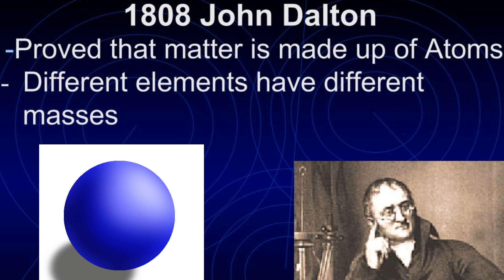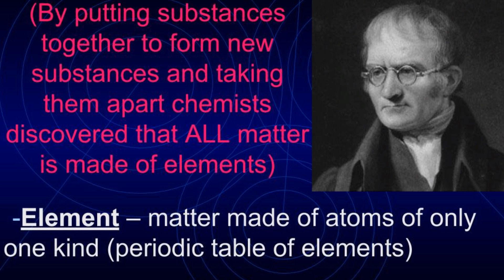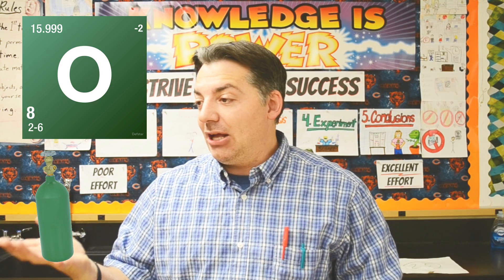Fast forward to 1808, a guy named John Dalton. He really proved that matter was made up of atoms and that different elements have different masses. He was a chemist interested in how you could put things together and break them down into their simplest forms. By doing this, chemists like John Dalton discovered that all matter is made up of elements. An element is matter made of atoms of only one kind — gold has gold atoms, carbon has carbon atoms, iron has iron atoms, oxygen has oxygen atoms. John Dalton really proved that things were made of atoms.